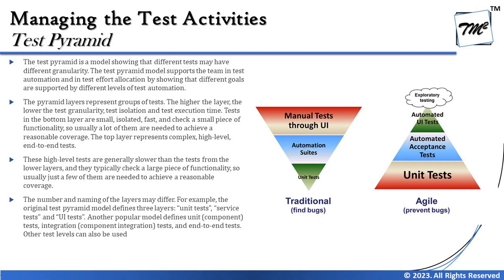On the left side, there's an example of an inverted pyramid representing the traditional model — minimal unit tests and more manual tests through UI, conducted later at system testing, acceptance testing, or integration. The key understanding is that agile puts more effort in early to prevent defects, whereas in traditional models the focus is more on finding defects rather than preventing them.